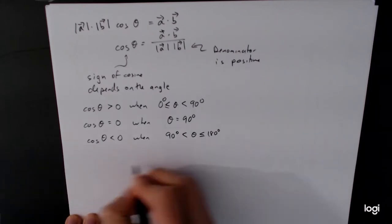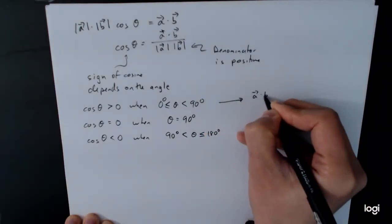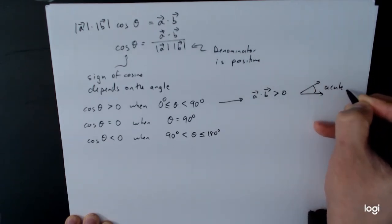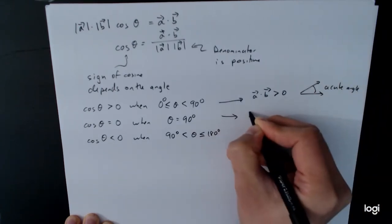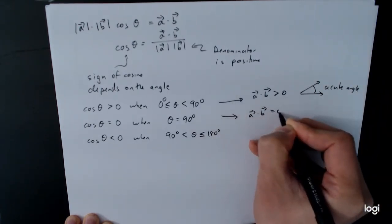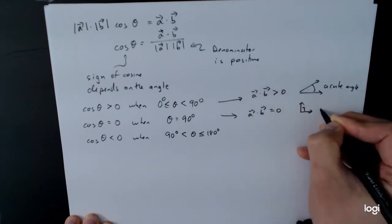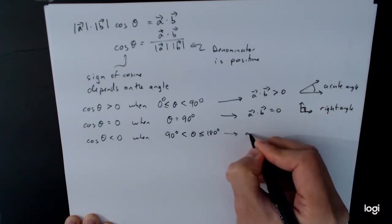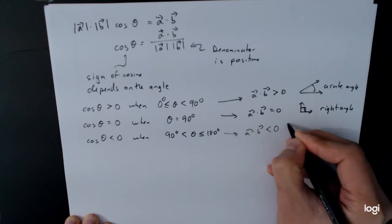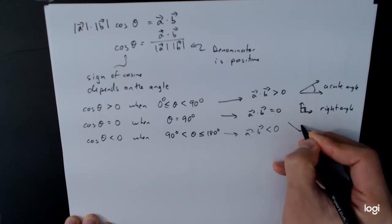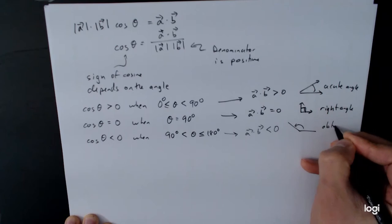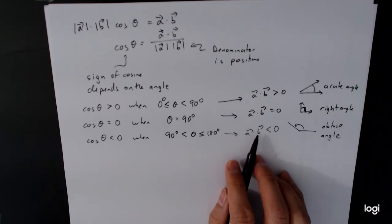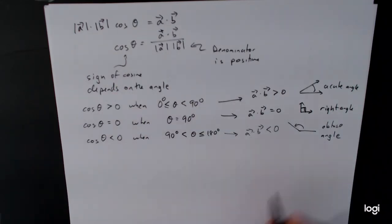So what this means is: if A dot B is greater than 0, then we have an acute angle. If A dot B is equal to 0, then we have a right angle. And if A dot B is less than 0, then we have an obtuse angle. Being able to calculate the dot product quickly tells you the geometric relationship between two vectors.